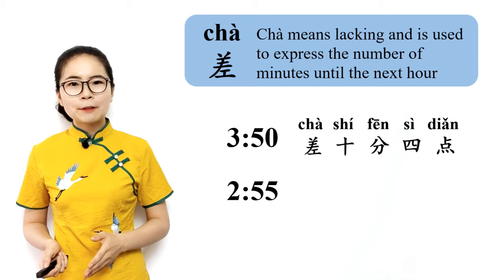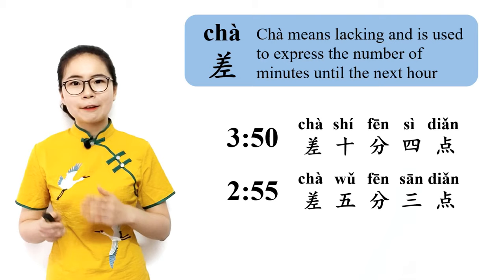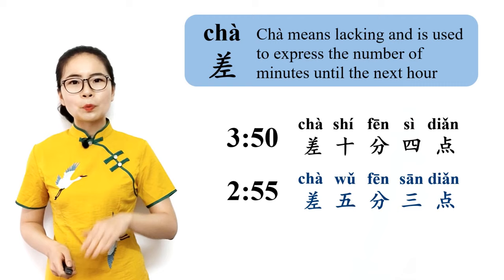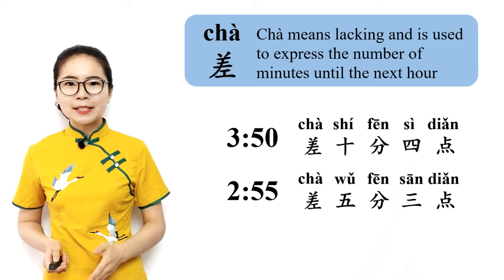And 2:55 is 5 minutes to 3, so you can say 差五分三点, which means lacking 5 minutes 3 o'clock — in other words, 5 minutes to 3. Please repeat after me: 差五分三点, 差五分三点, 5 minutes to 3.